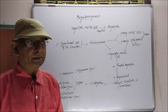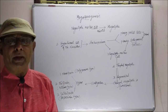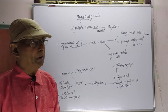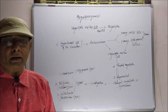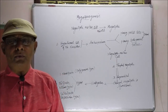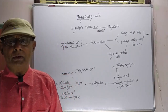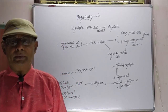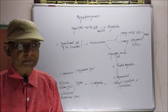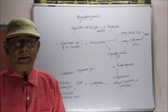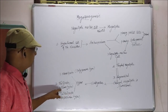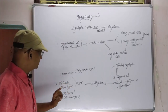The monosporic embryo sac is seen in the Polygonum type, so it is considered as the Polygonum type of embryo sac. The second type is the bisporic embryo sac. Out of the four megaspores formed, when two megaspores are involved in embryo sac formation, it is the bisporic embryo sac, seen in the Allium plant — otherwise called the Allium type of embryo sac.